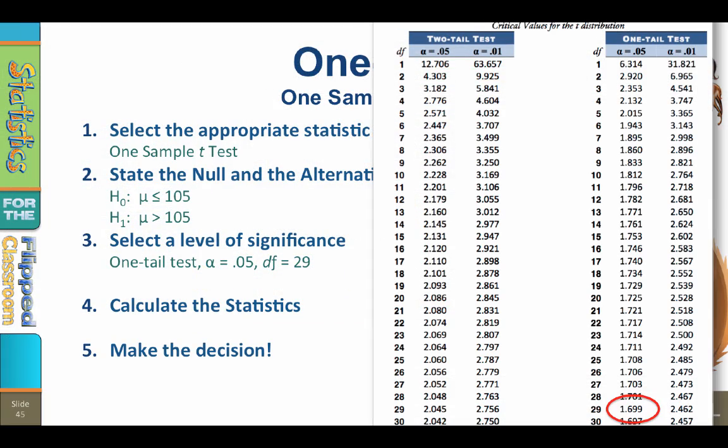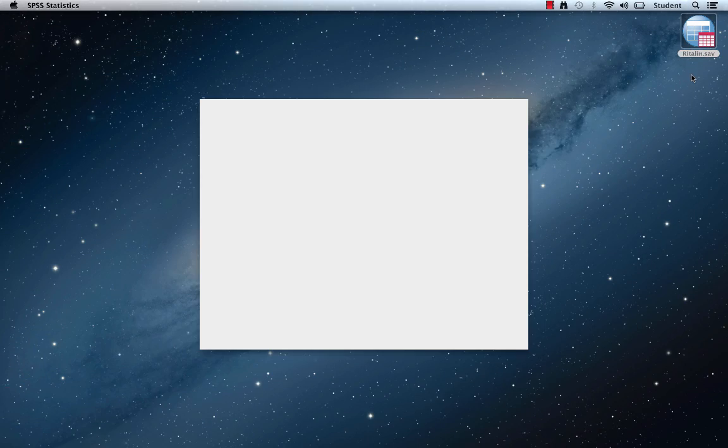So any t-values exceeding 1.699 indicate that the sample of children with ADHD who were given Ritalin have a statistically significantly longer attention span. And step four, calculate the statistics. For this, we will move to SPSS.